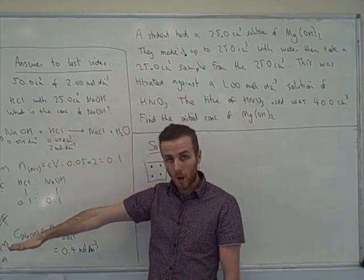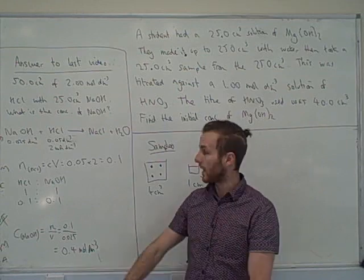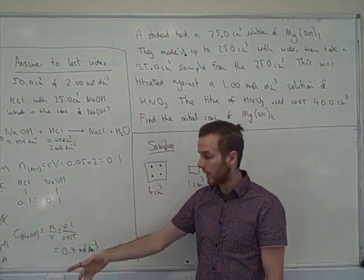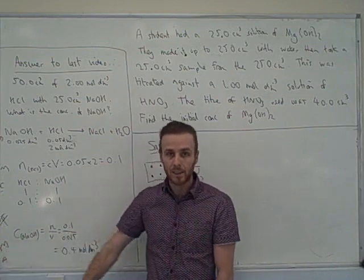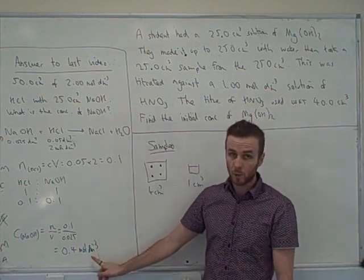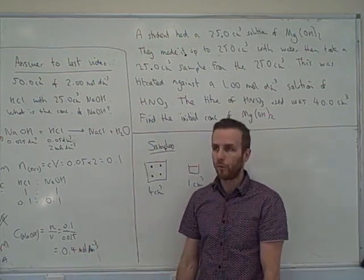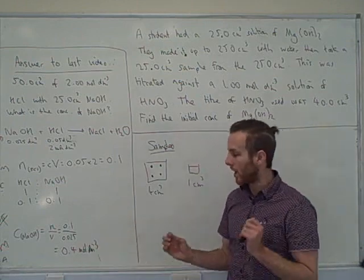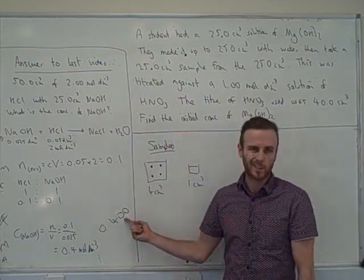The second moles equation always starts with the thing you're trying to find out. The question asks for the concentration of sodium hydroxide, so: concentration of sodium hydroxide equals moles over volume. Put in your numbers and you get 0.4. Don't forget the 'Auntie' step — check your units, moles per decimetre cubed, and make sure you have no fewer than three significant figures. 0.4 is the complete answer here, so you could write 0.400, but we usually drop trailing zeros.